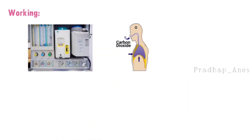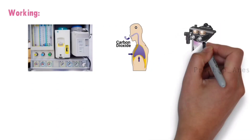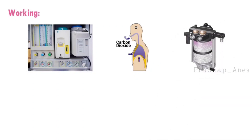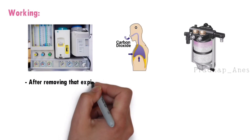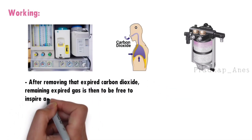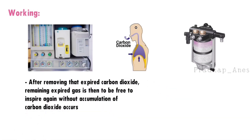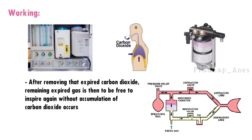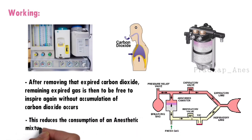Among them, carbon dioxide is the only waste gas that should not be re-administered. So a device called a carbon dioxide absorber is used to absorb that exhaled carbon dioxide. After removing that expired carbon dioxide, the remaining expired gases are then free to be inspired again without accumulation of carbon dioxide. In simple words, the patient rebreathes the same anesthetic mixture again and again, which reduces the consumption of the anesthetic mixture.